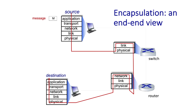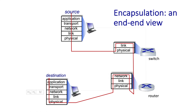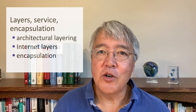Now let's take the end-to-end view as an application layer message starts its journey at a source process and makes its way to an application layer process at the destination. As you watch this animation, pay attention to two things: first, what's happening with the headers at each layer of the protocol stack; and second, notice that deeper within the network, switches and routers only implement the lower layers of the protocol stack — because their job is only to forward frames and datagrams, not to operate on higher-level transport layer segments or application layer messages.